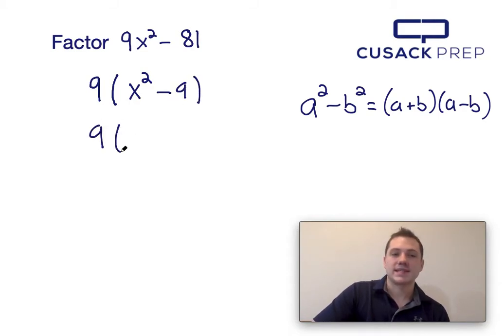Now I recognize that x squared minus 9 can be factored via the difference of squares equation, which is presented on the right hand side.